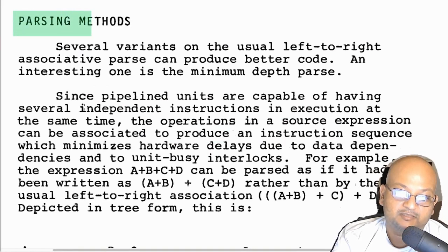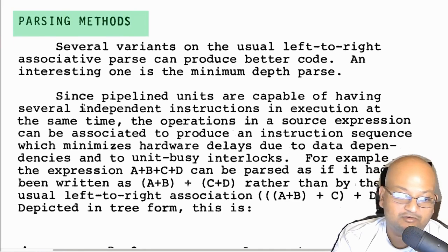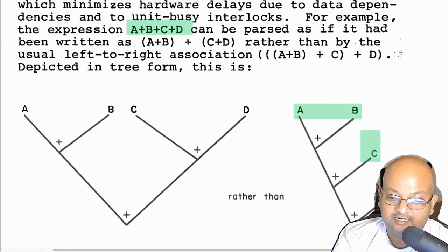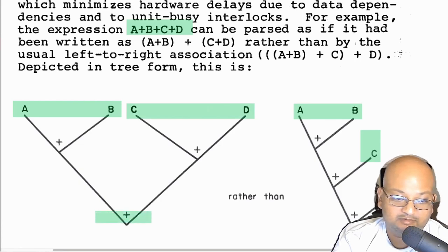You can also optimize by changing how you parse various operations. For example, if you're adding four numbers A, B, C, and D, instead of adding A to B and then adding C to it and then adding D to it, you could add them two at a time. So add A and B, then add C and D, and then add the results of those two expressions. The big advantage of this is that the two subexpressions can be added in parallel.